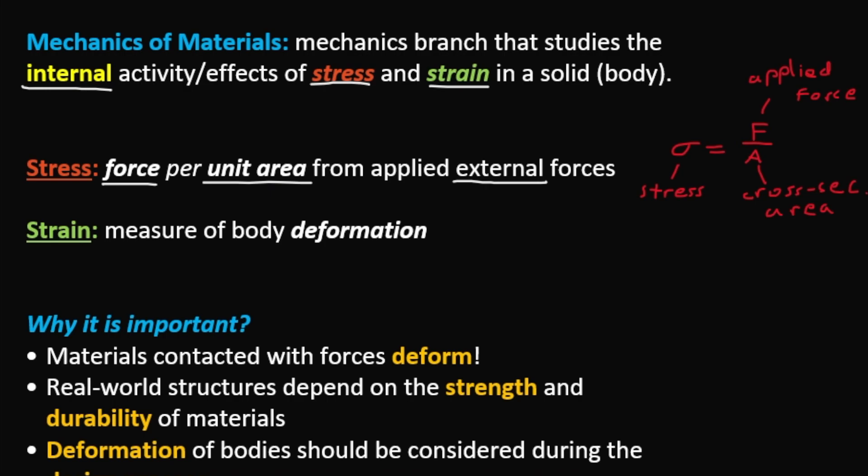And strain is pretty much the measure of a body's deformation. Here we mathematically define strain as epsilon, which is equal to the change in length over the original length. Delta L is the new length L minus the original length L naught, so this can simply be rewritten as L minus L naught over L naught. I'll be further elaborating these concepts later in the video and will go over some simple examples for you to get a better understanding.